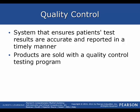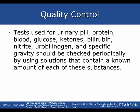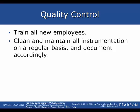Quality control is a system that ensures patient test results are accurate and reported in a timely manner. Conduct testing on a regular basis, review the expiration date before any test, and precisely follow directions. One of the most important things is to document quality control in the quality control log. Tests for urinary pH, protein, blood, glucose, ketones, bilirubin, nitrate, urobilinogen, and specific gravity should be checked periodically using solutions that contain a known amount of each substance — your control substance. Train all new employees and clean and maintain all instrumentation on a regular basis, documenting accordingly.